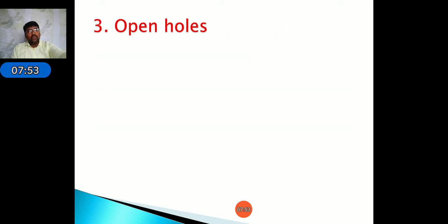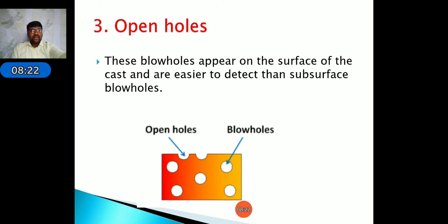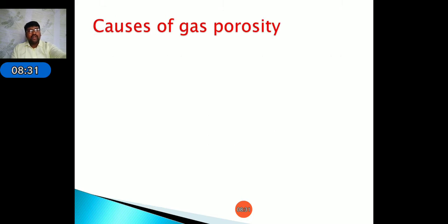Open holes are blow holes that appear on the surface of the casting and are easier to detect than subsurface holes. Because these defects form on the surface of the object, they can be identified easily by the naked eye without requiring any special equipment.